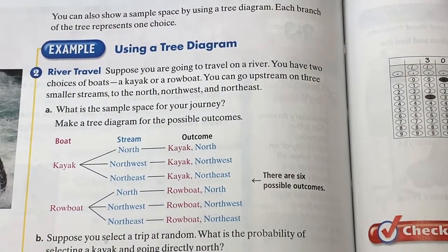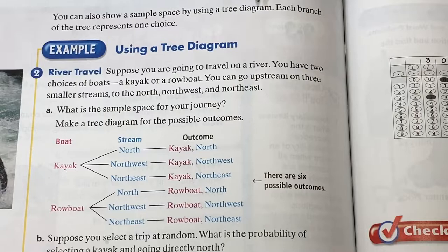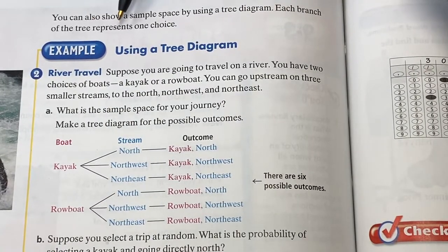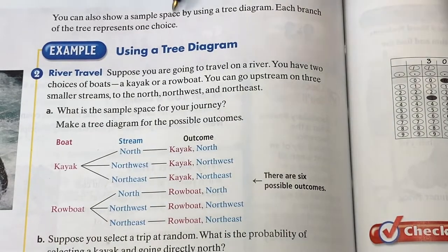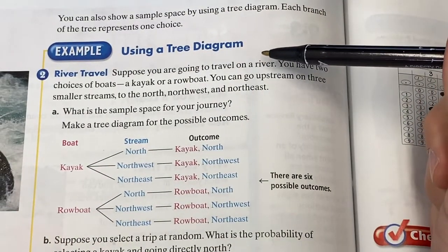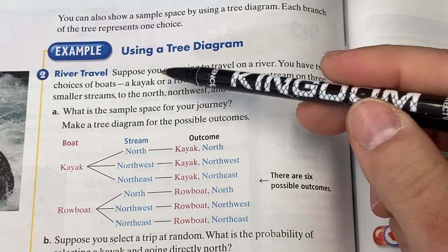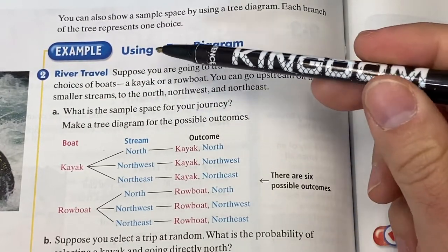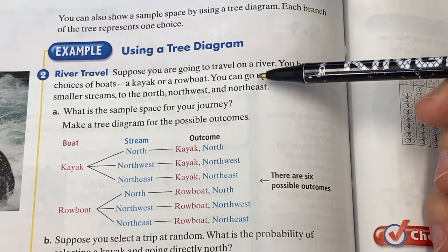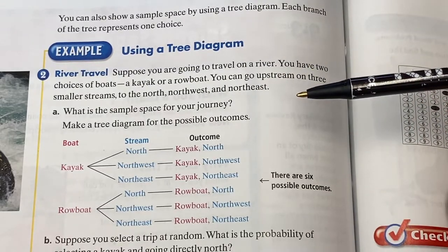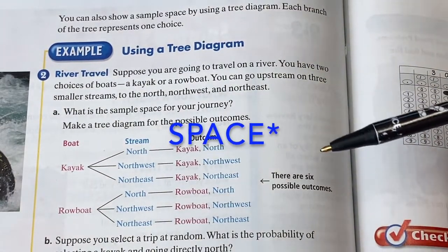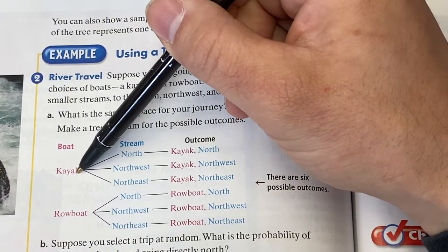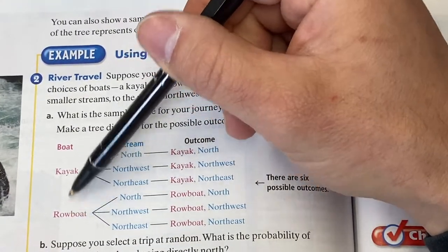You can see it says right here, you can also show a sample space by using a tree diagram. So not a table, but a tree diagram. Each branch of the tree represents one choice. Suppose you're going to travel on a river. You have two choices of boats. You could take a kayak or a rowboat. You can go upstream on three smaller streams. North, northwest, or northeast. How would we write our sample diagram using a tree diagram? First, we choose our boat. Kayak or rowboat. So there's our two options there.